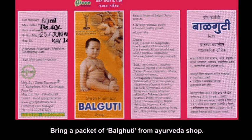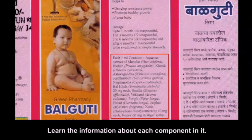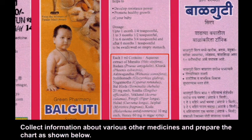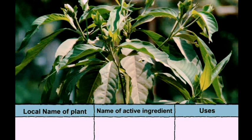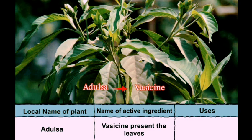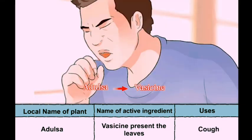Try this: bring a packet of Balgo Tea from an Ayurvedic shop. Learn the information about each component in it. Collect information about various other medicines and prepare a chart. For example, the local name of a plant: Adulsa — the active ingredient present in the leaves — is used for cough.